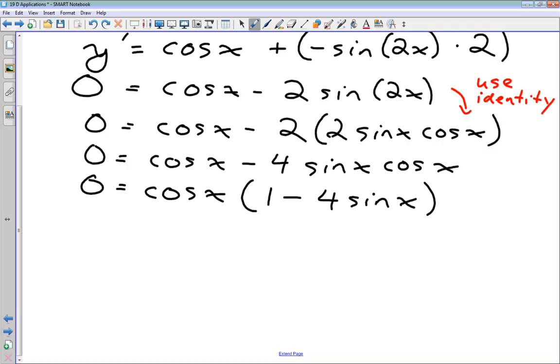And I get one minus four sine x. Now that this is in factored form, what do we do with each of our factors? We set each of them equal to zero, and we try to solve them separately. So we're going to have cos x equals zero, and we're going to have one minus four sine x equals zero.